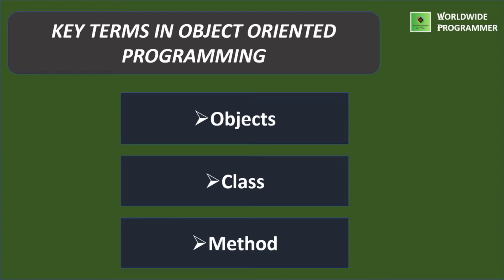The last key term is method. An operation required for an object or entity when coded in a class is called a method. The operations that are required for an object are to be defined in the class. All objects in a class perform certain common actions or operations. Each action needs an object that becomes a function of the class that defines it, and is referred to as a method.